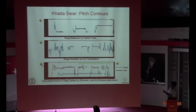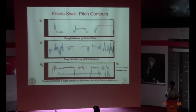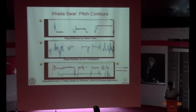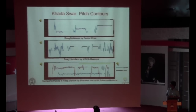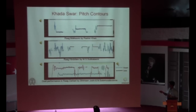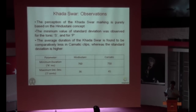The duration of the khada swar in this Hindustani clip is almost 7.5 seconds, and in the alap section the average duration is above 5 seconds. For the Carnatic contour, the longest khada swar was near 4 seconds, but the average duration obtained from this recording was 1.5 to 2 seconds. The standard deviation of the Hindustani clip is very steady. On the tonic swara, on average the gamaka or deviation in Carnatic is higher. The perception of khada swar marking was purely based on the Hindustani concept.